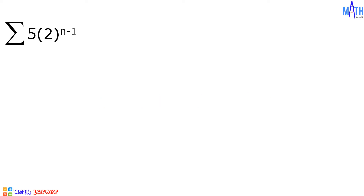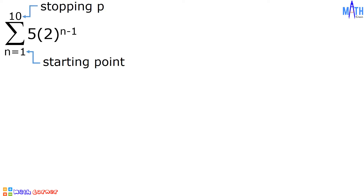Let us evaluate the summation of 5 times 2 raised to n minus 1, where n goes from 1 to 10. In this notation, since n goes from 1 to 10, 1 is the starting point and 10 is the stopping point. It means that the number of terms is equal to 10. We need to find the sum of the first 10 terms of the expression 5 times 2 raised to n minus 1.